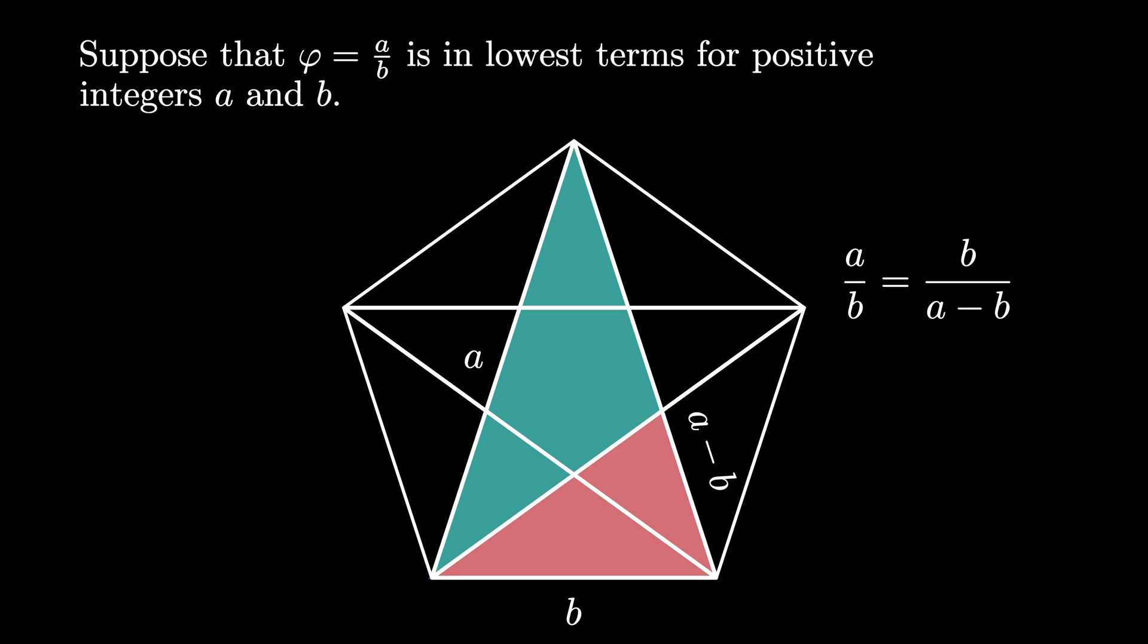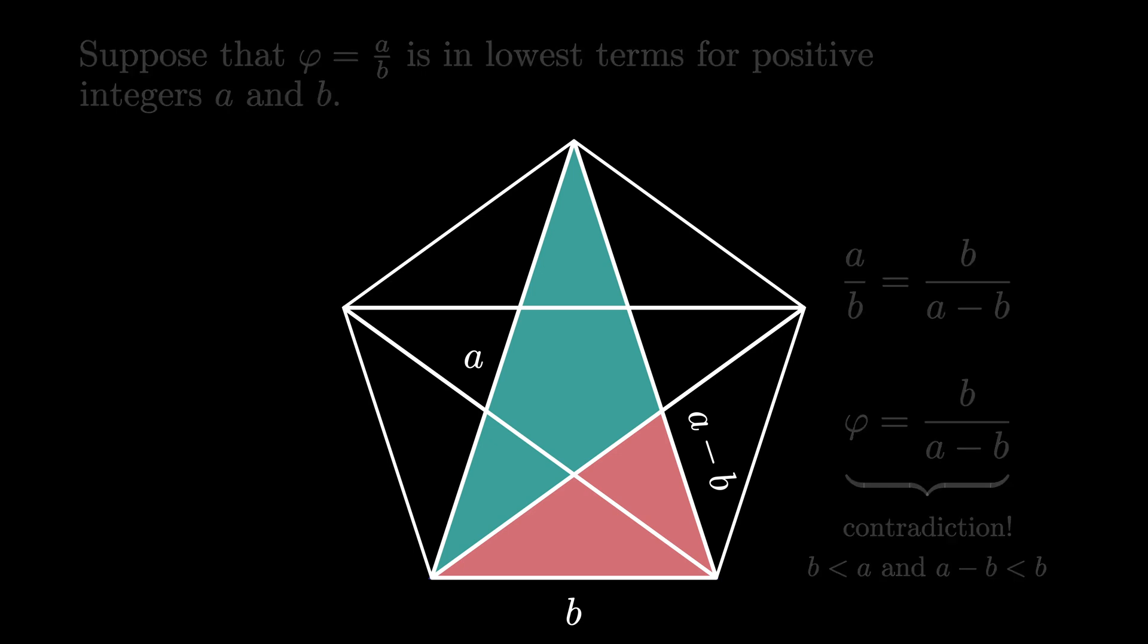But phi equals a over b, so that means phi equals b over a minus b, and this is a contradiction, because b is less than a, and a minus b is less than b. So this contradicts that we had phi in lowest terms when we wrote it as a over b. But that means our original assumption was wrong, so that the golden ratio phi cannot be written as the ratio of two integer values, and so the golden ratio is irrational.